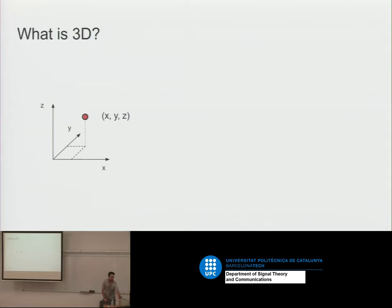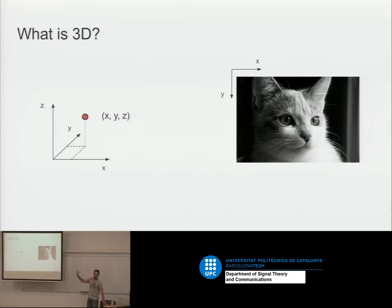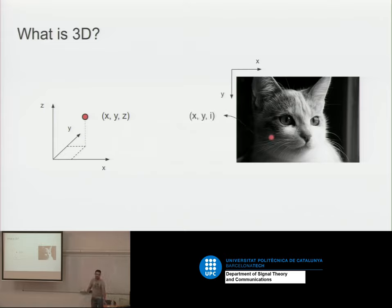We should start with this question: what's 3D? If I show you this image, maybe you would say it's 3D or it's not 3D. Both images are actually 3D — they both represent three dimensions. This grayscale image could represent 3D, but with it we could only represent surfaces, not volumes. With the other one we could represent anything we want.